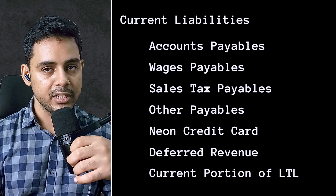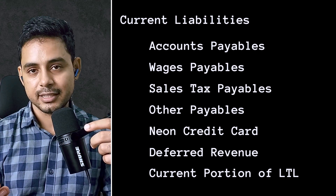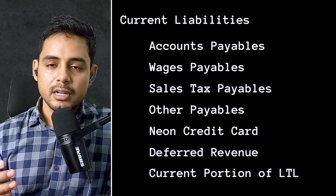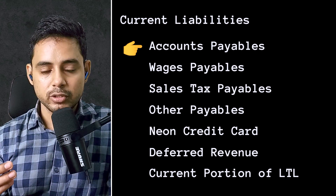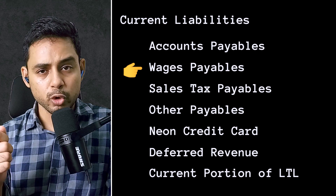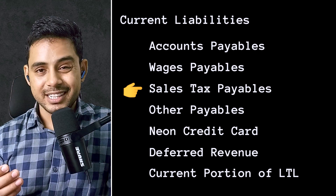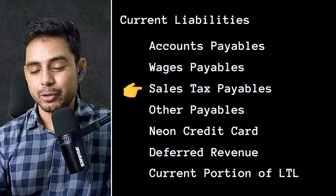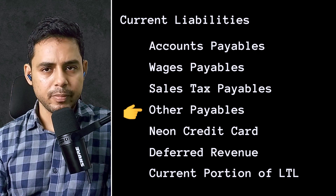Moving on to liabilities — these are things that the business owes to external parties. You will have current liabilities and non-current liabilities. Current liabilities are those due in the short term, that is in less than a year, while long-term liabilities are paid off over several fiscal years. In current liabilities, you will need an accounts payable account to record what you owe to vendors for purchases on credit, a wages payable account for wages owed to employees or contractors, and a sales tax payable account to store the amount owed to the appropriate tax agency.